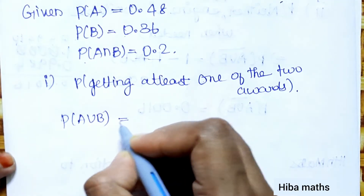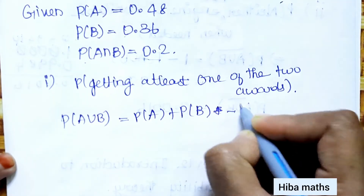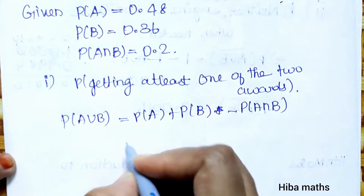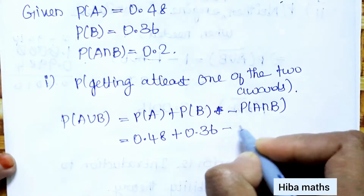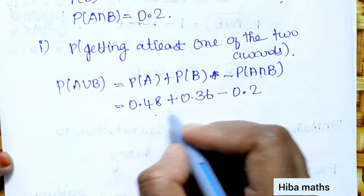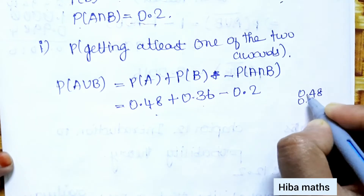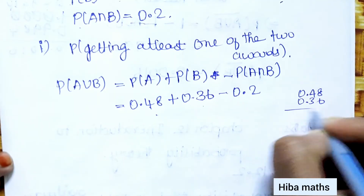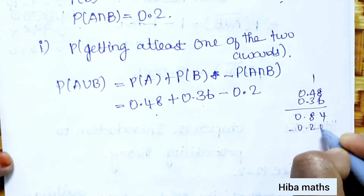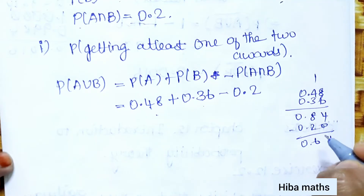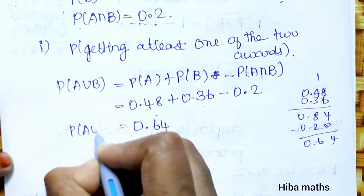P(A∪B) = P(A) + P(B) − P(A∩B) = 0.48 + 0.36 − 0.20 = 0.84 − 0.20 = 0.64. So the probability of getting at least one of the two awards is 0.64.